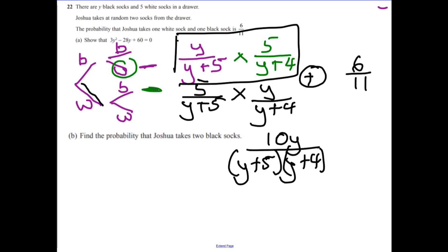And we know it's equal to 6 over 11. So multiply both sides by that denominator and multiply both sides by that denominator there. So that gives us 110y equals 6 multiplied by y plus 5 and y plus 4. So if I just multiply that out, that's going to be y squared plus 9y.